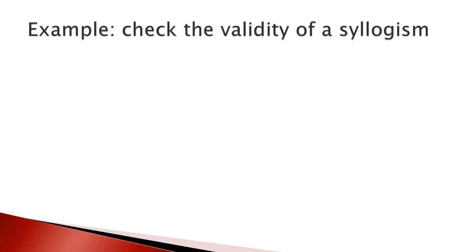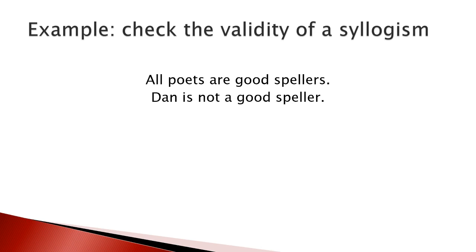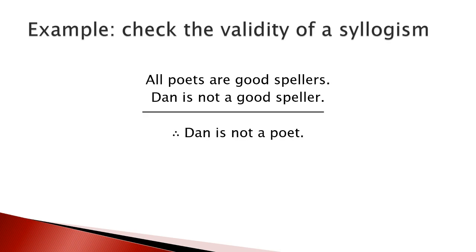Now we look at an example of a syllogism. All poets are good spellers. Tan is not a good speller. Therefore, Tan is not a poet. The first two statements before the horizontal line are called premises, and the last statement after the horizontal line is called a conclusion. Now we are going to check the validity of this syllogism.